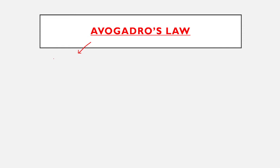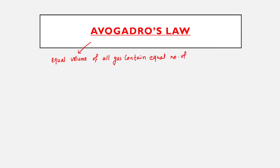Avogadro's law states: equal volumes of all gases contain equal numbers of molecules under similar conditions of temperature and pressure. So if we suppose the number of molecules is N, equal volumes of all gases contain equal number of molecules N.